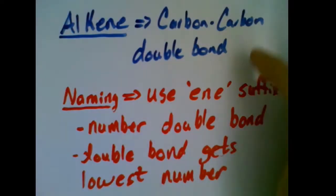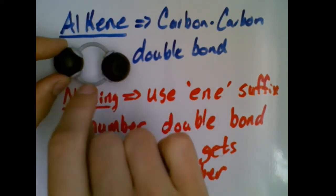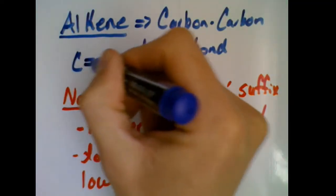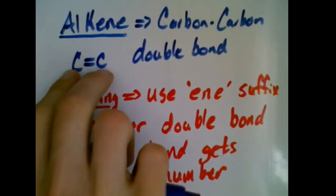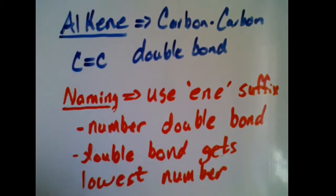Now that we've seen how to name alkanes, it's important to understand that there are more ways that carbon can bond than just single bonds. This leads us into two different types of compounds where we see a double bond or a triple bond between two carbons. When two carbons have a double bond between them, this creates a compound called an alkene. The double bond must be between two carbons — compounds with double bonds elsewhere are not alkenes.